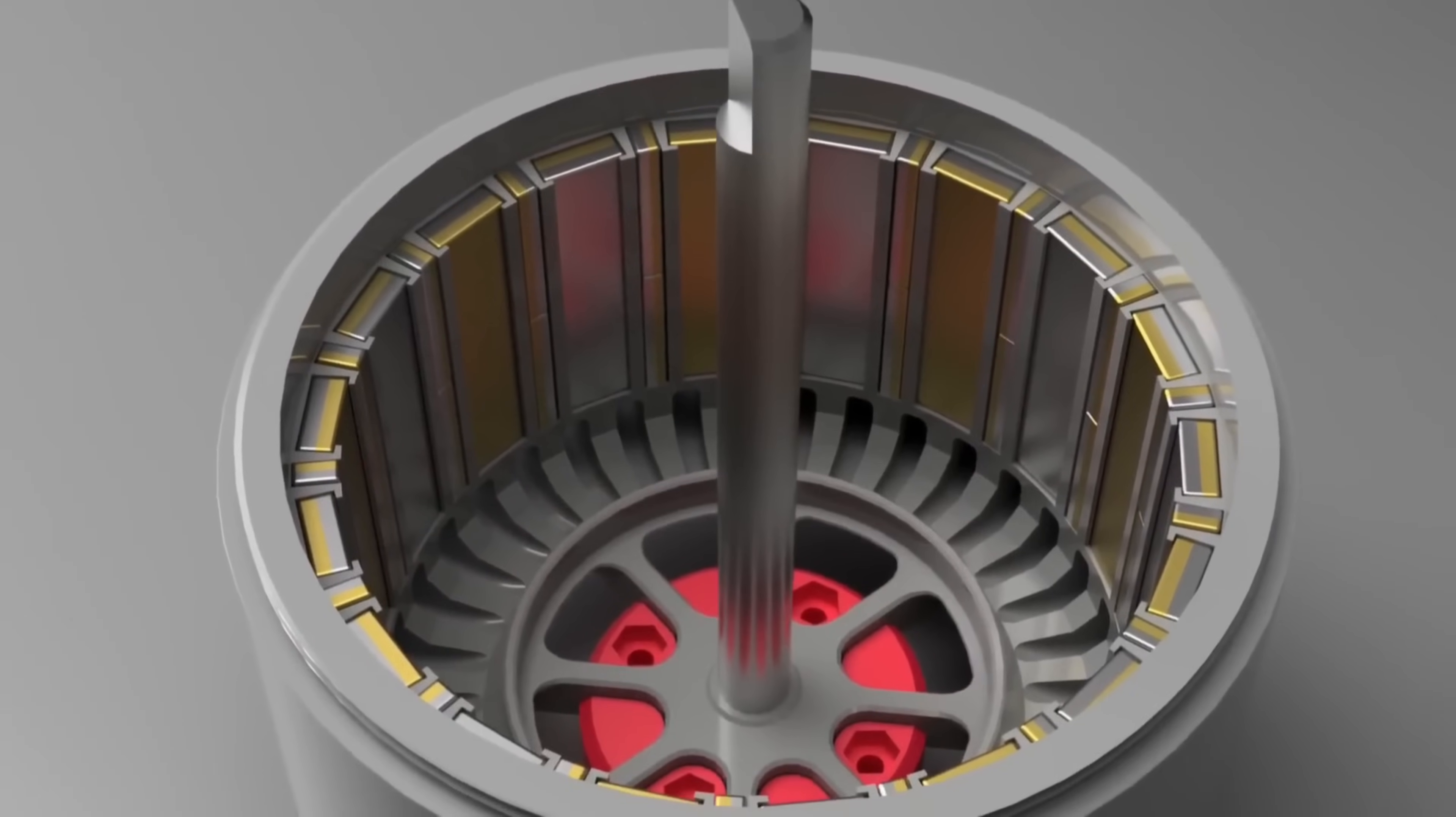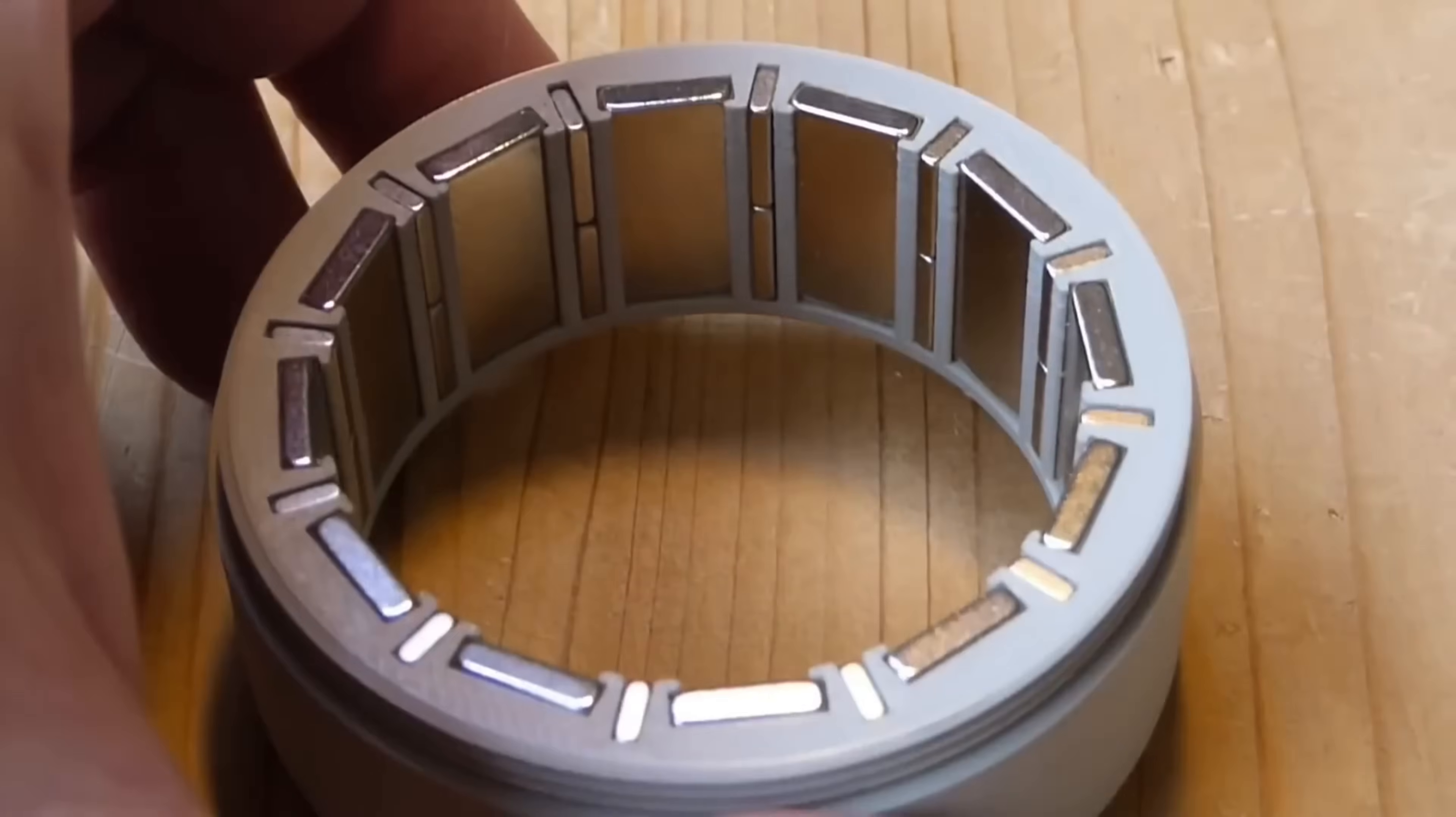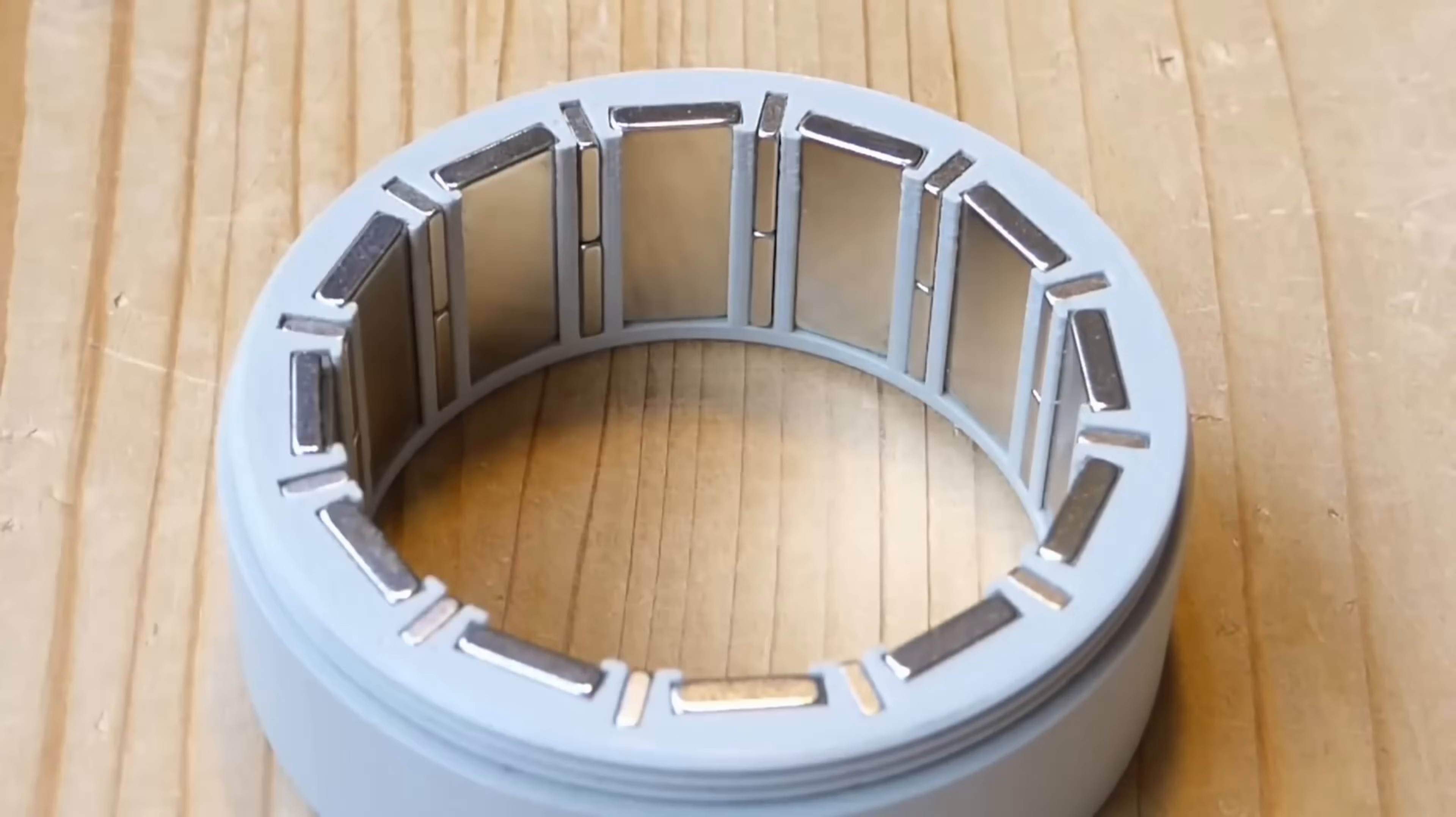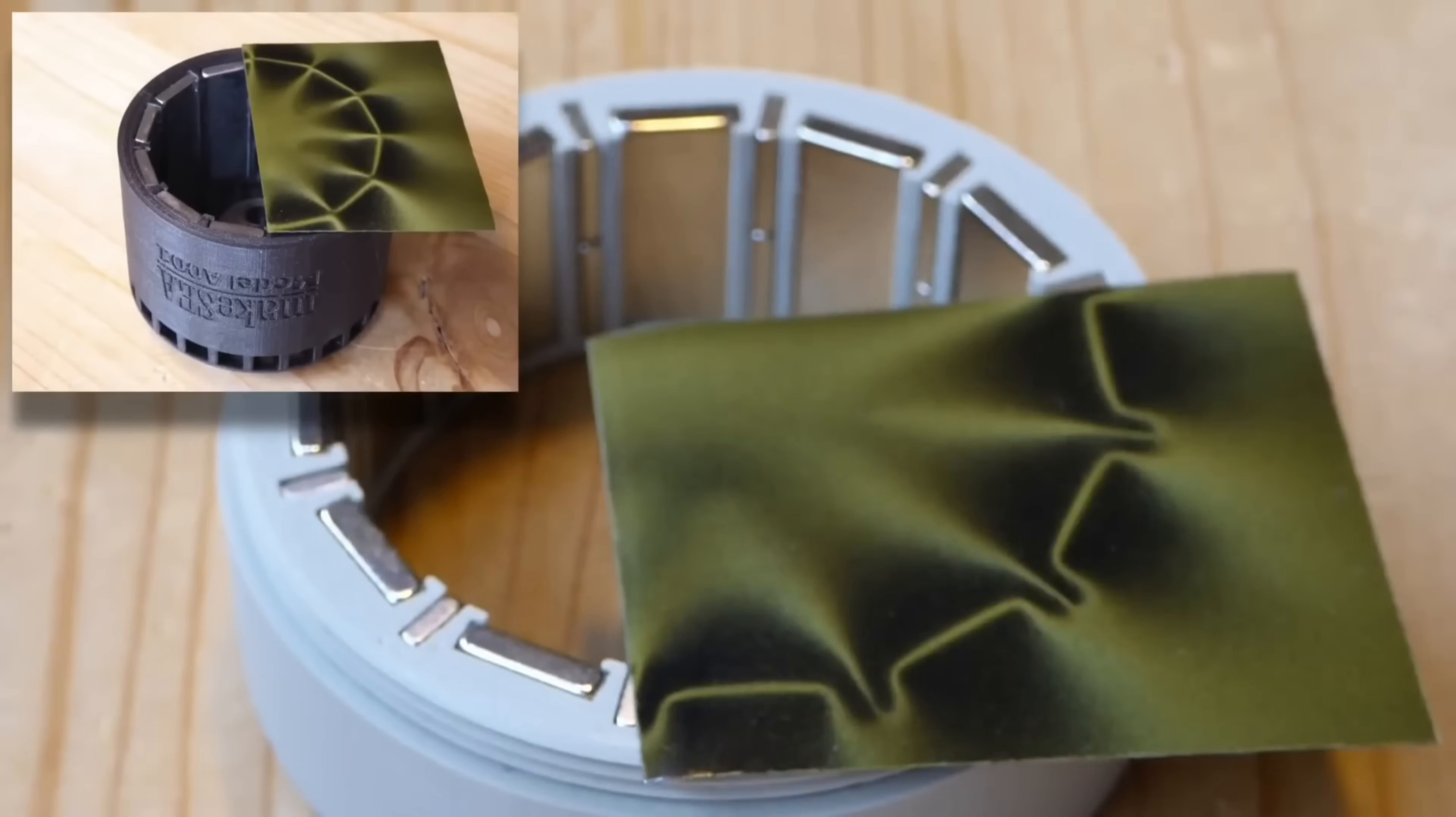To gain a deeper understanding, let's explore the working principles of Hallback Arrays. In 1987, Clash-Hallback discovered that configuring magnets in a specific manner can alter the magnetic field of the entire array.